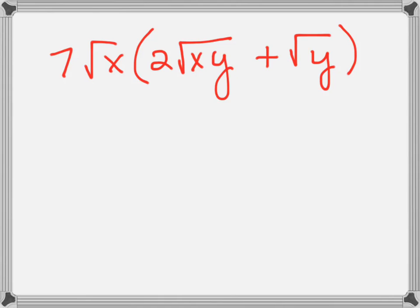Now let's look at the distributive property using multiplication of radicals. We're going to first take 7 square roots of x, and multiply it times 2 square roots of xy, giving us 14 square roots of x squared y.